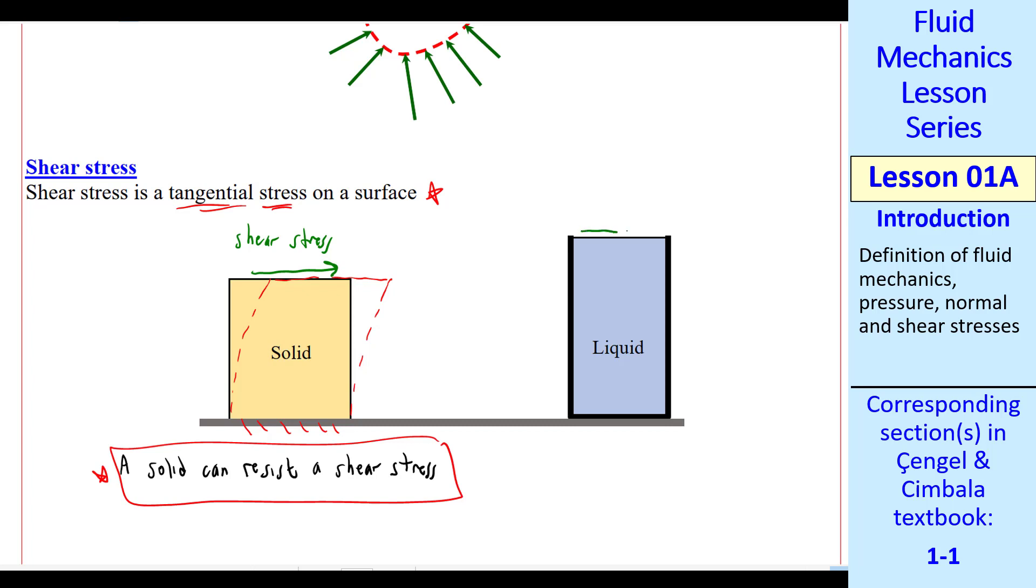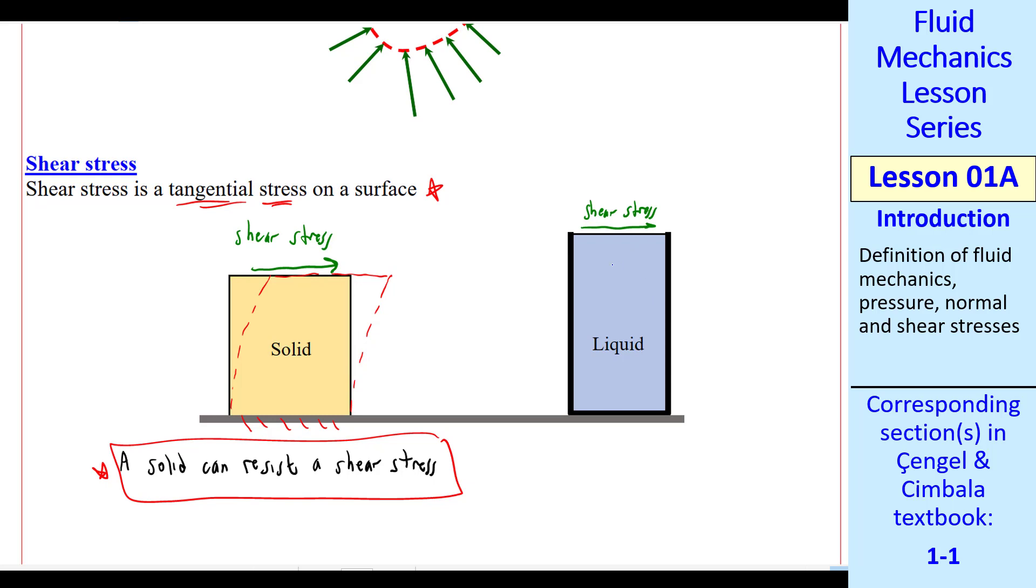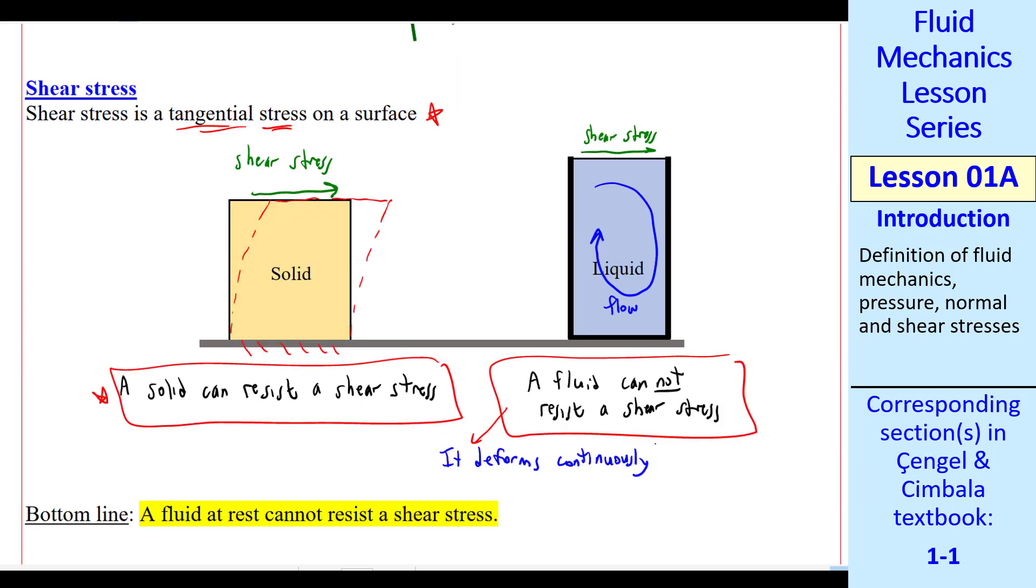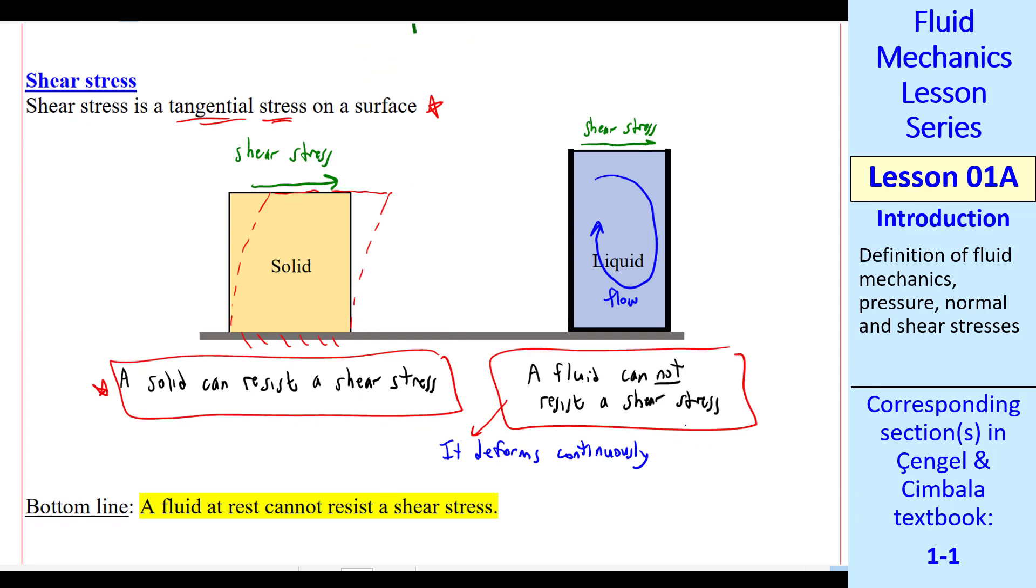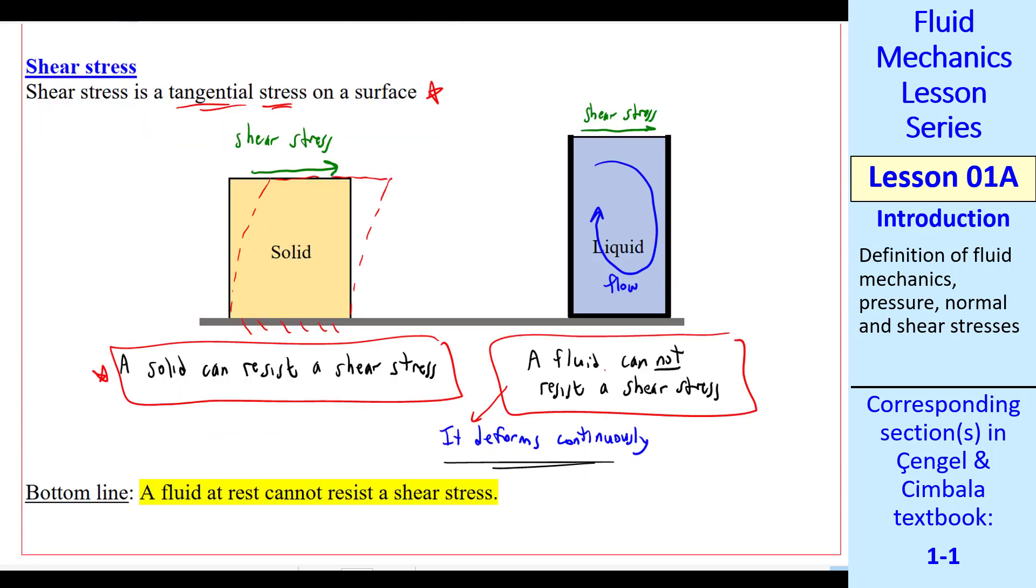What happens if we try the same thing on a liquid? We apply a shear stress at this free surface of the liquid. Again, the container can't distort, but the liquid will start moving. In fact, it'll set up some kind of a recirculating pattern. So it sets up a flow internally in this container. In other words, a fluid cannot resist a shear stress. It deforms continuously when you apply a shear stress. And deforming continuously means that it sets up some kind of a flow. So to make this more correct, we need to say a fluid at rest cannot resist a shear stress. And that's the bottom line of what we wrote here. A fluid at rest cannot resist a shear stress. Instead, it will deform and flow.